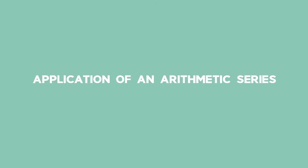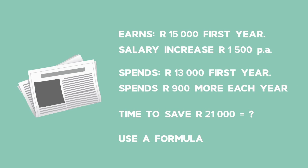Example 4: Application of an arithmetic series. Tandi works as a newspaper delivery agent and initially earns 15,000 rand in her first year. Thereafter, her salary increases by 1,500 rand a year. Her expenses are 13,000 rand during the first year, and then increase by 900 rand in each subsequent year. Use a formula to determine how long it would take her to save 21,000 rand, assuming money saved each year is not deposited into an account so no interest is added, and that she saves any money left over after paying expenses.